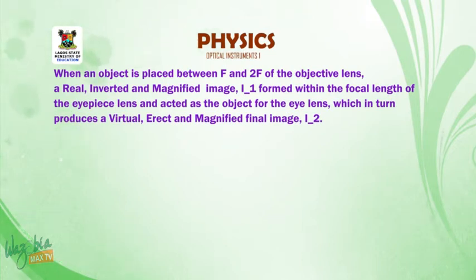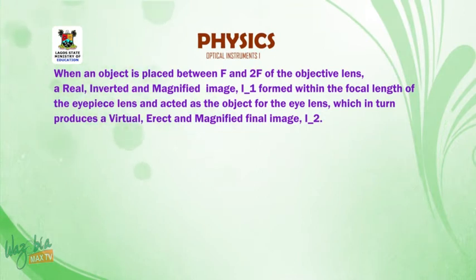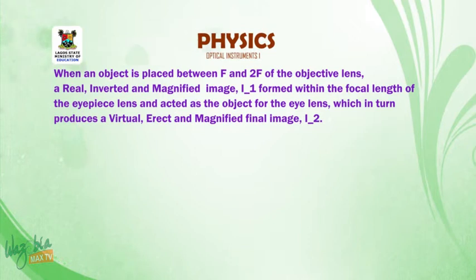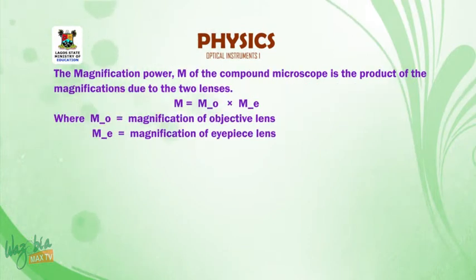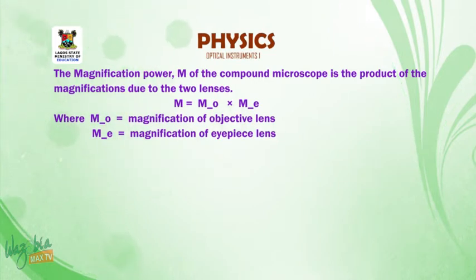When an object is placed between F and 2F of the objective lens, a real, inverted, and magnified image I1 is formed within the focal length of the eyepiece lens. This acts as an object for the eyepiece lens, which in turn produces a virtual, erect, and magnified final image I2. The magnification power of the compound microscope is M = M0 × ME, where M0 is the magnification of the objective lens and ME is the magnification of the eyepiece lens.